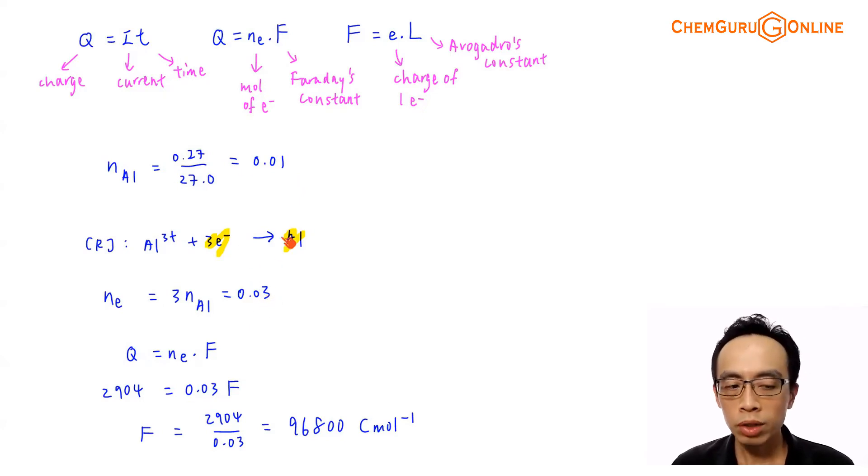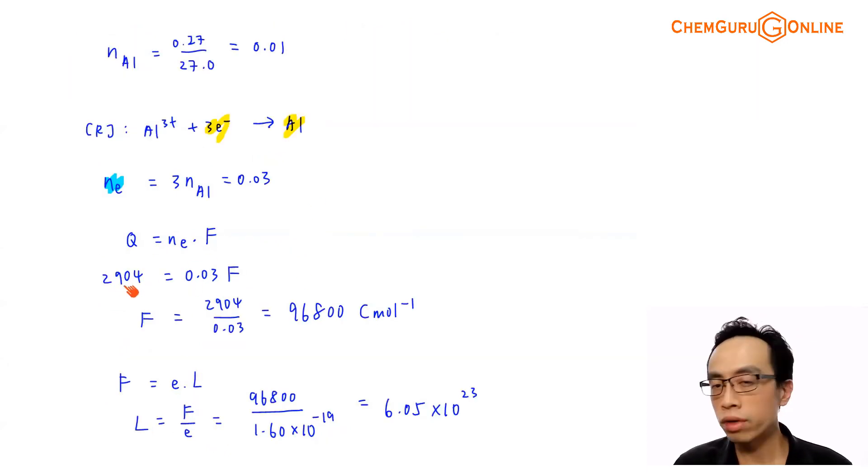Now once we have the number of moles of electron, then we can link this to my Faraday's equation, and I can try to work out the value for F. So I use the equation Q equals to number of moles of electron multiplied by Faraday's constant. Quantity of charge is already given, 2904. Number of moles of electron, we have calculated 0.03. So we can actually calculate the value for F. F in this case would be 2904 divided by 0.03, which is 96800 Coulomb per mole.